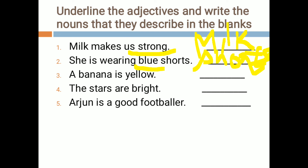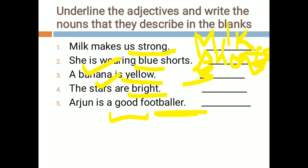Then, 'a banana is yellow' — yellow is a color, so 'yellow' is the adjective and 'banana' is the noun. Next, 'the stars are bright' — bright is a quality, so 'bright' is the adjective and 'stars' is the noun. Last, 'Arjun is a good footballer' — 'good' is the adjective and 'footballer' is the noun, because good relates to the noun footballer.